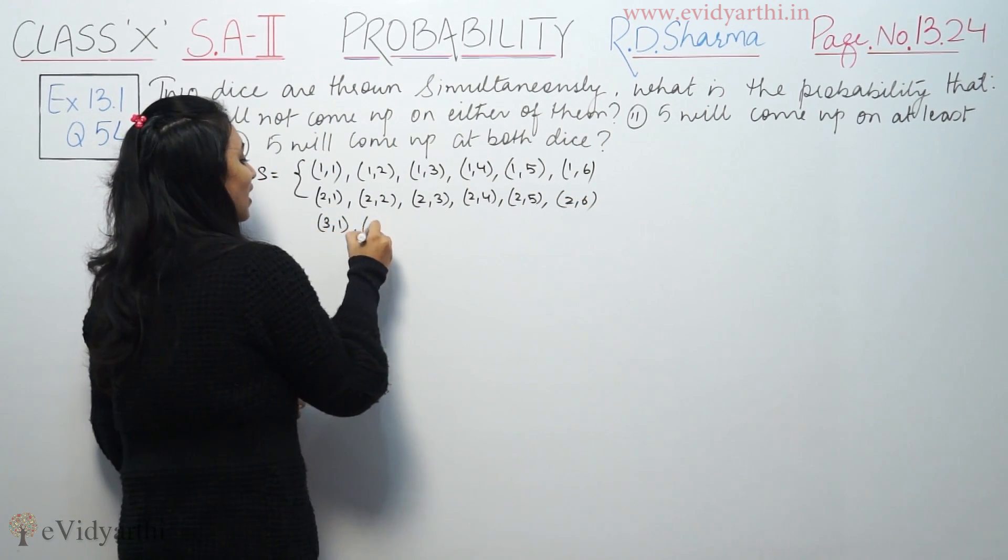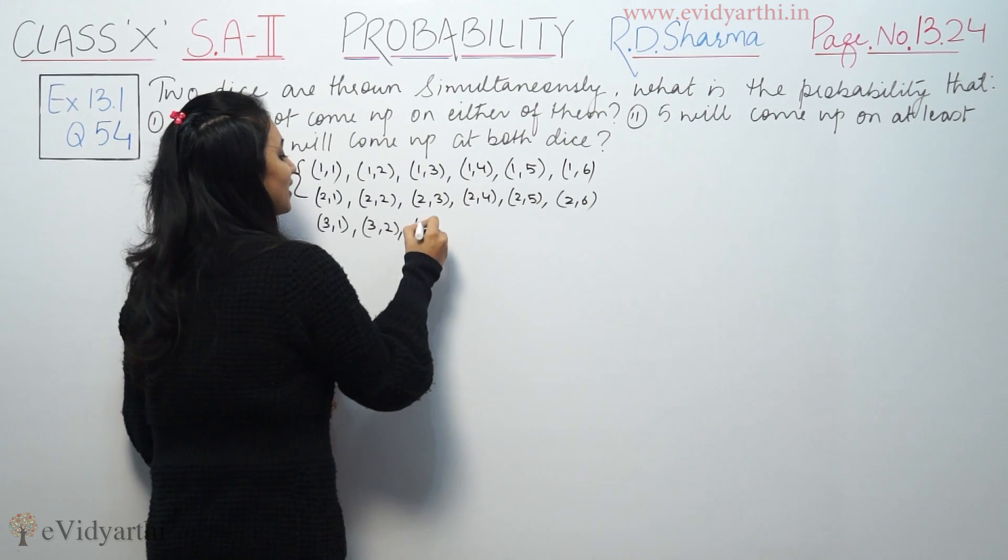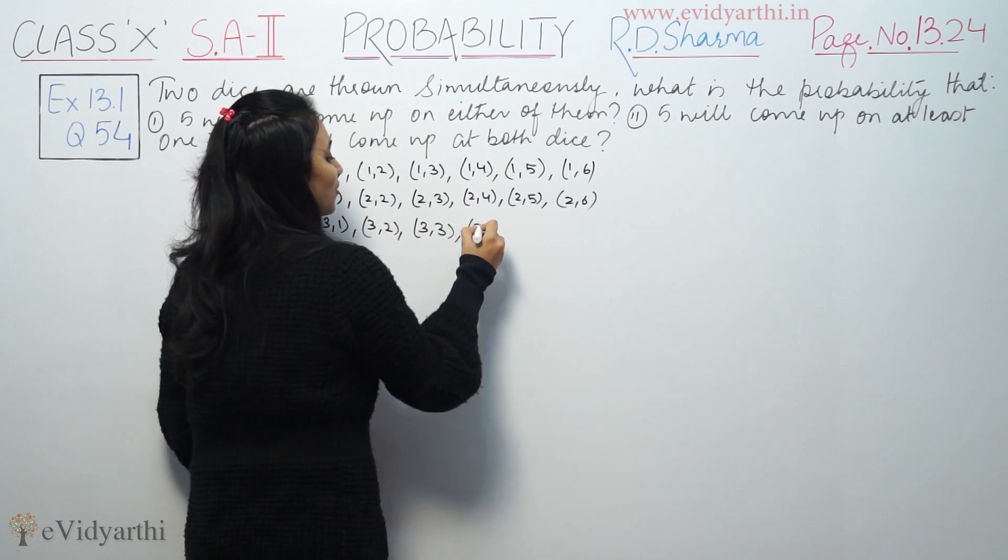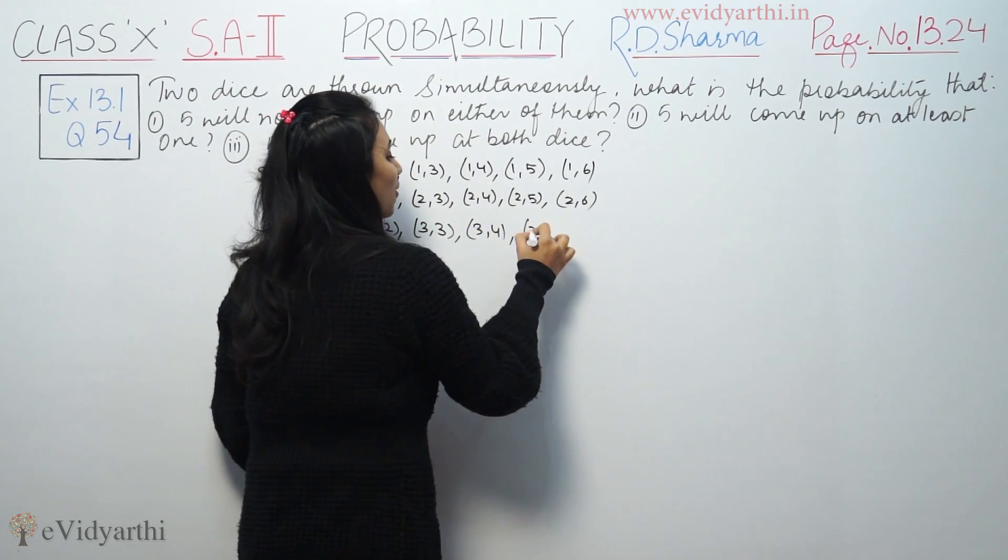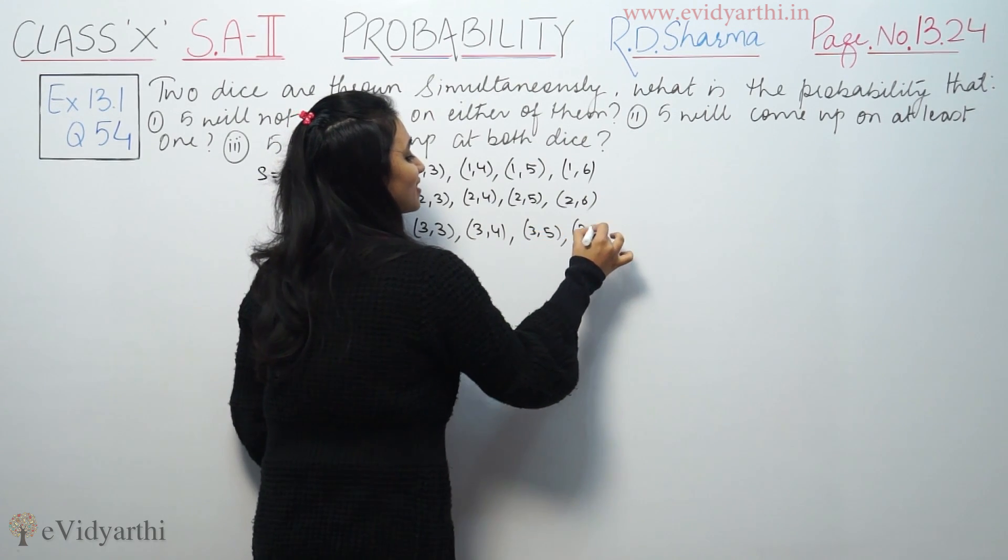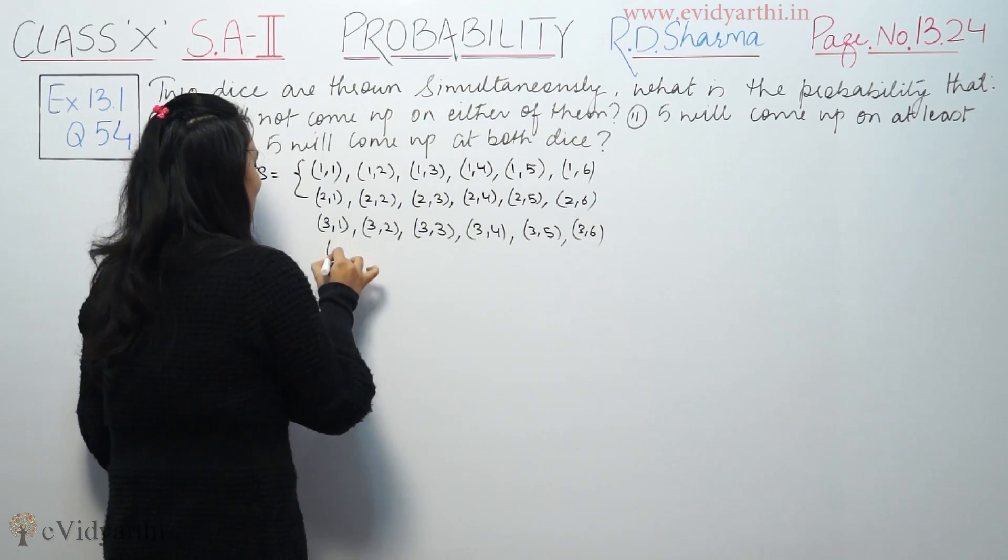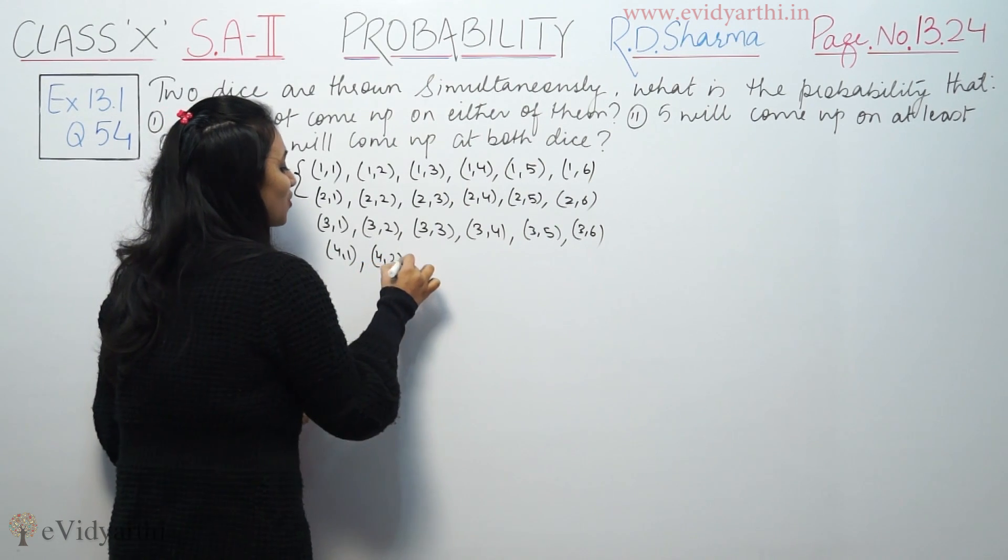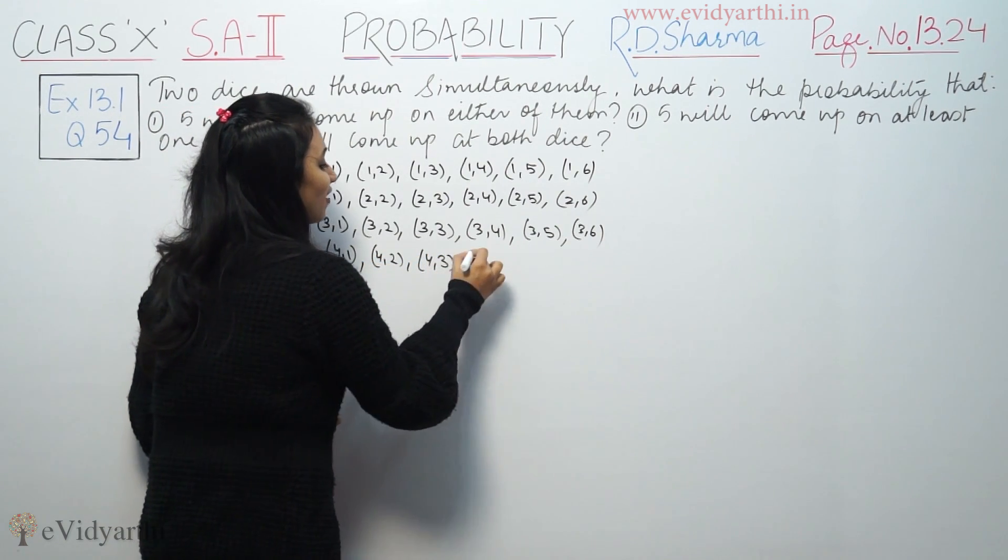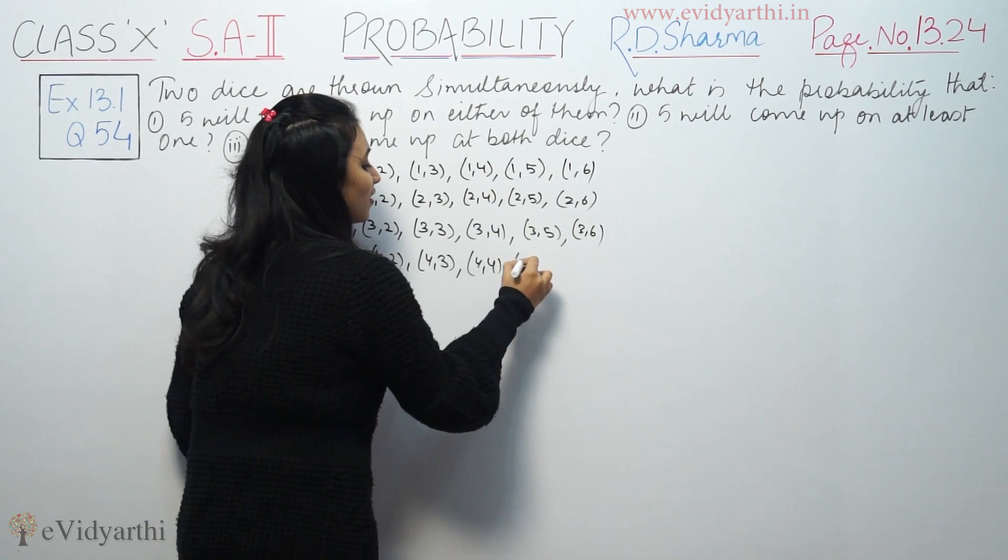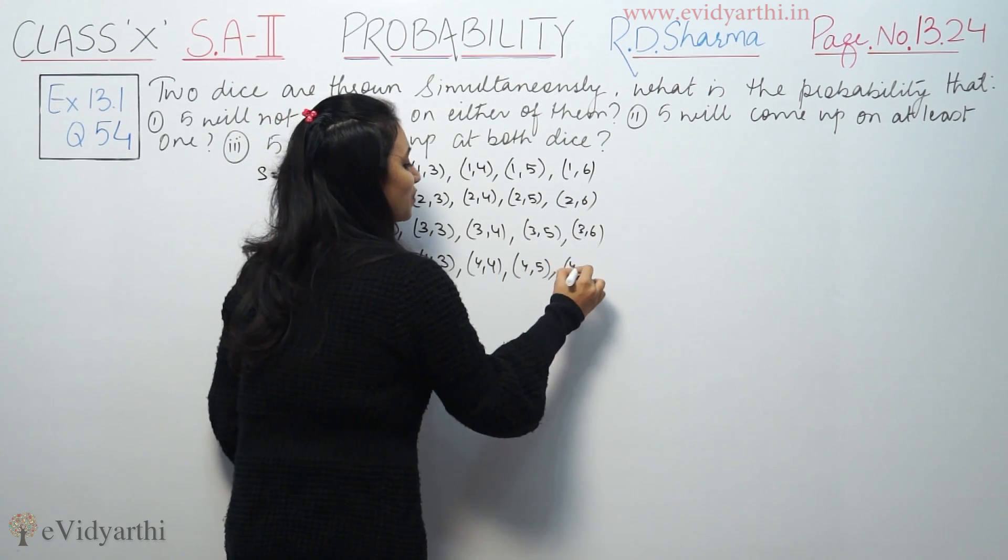First die showing 3: 3 comma 1, 3 comma 2, 3 comma 3, 3 comma 4, 3 comma 5, 3 comma 6. Combination 4 comma 1, 4 comma 2, 4 comma 3, 4 comma 4, 4 comma 5, 4 comma 6.